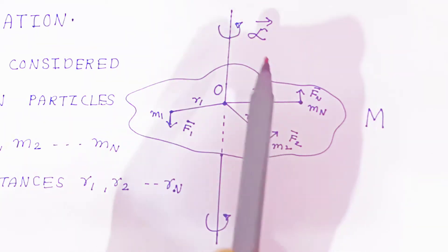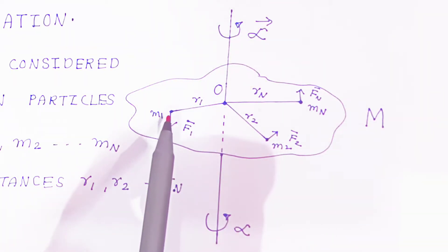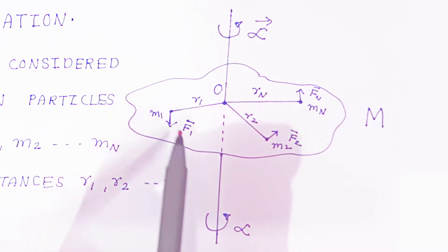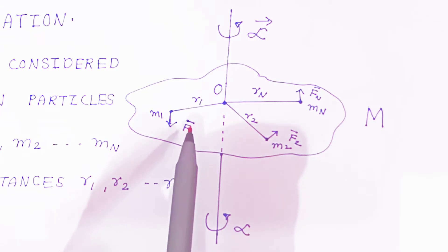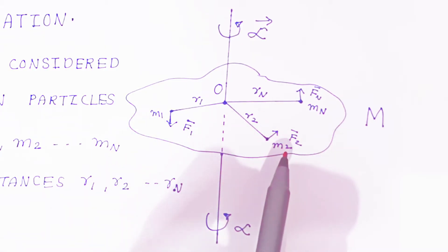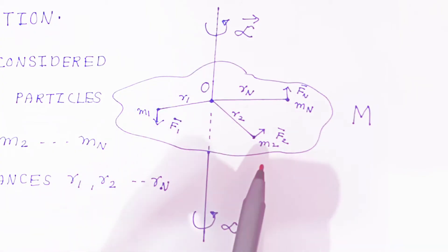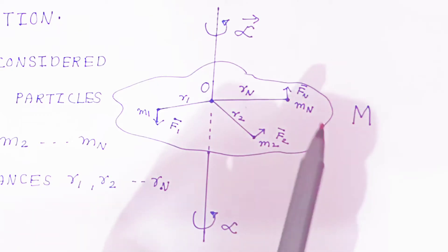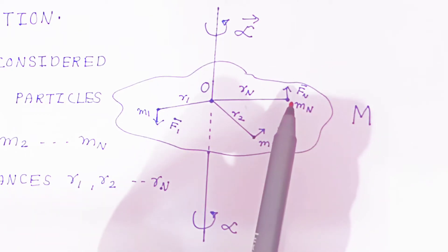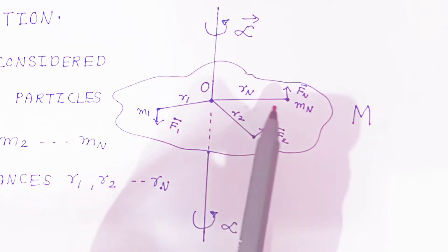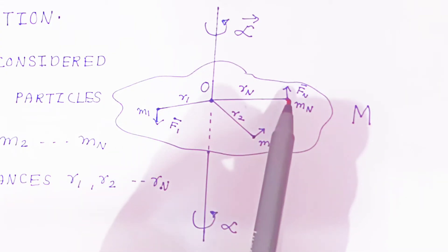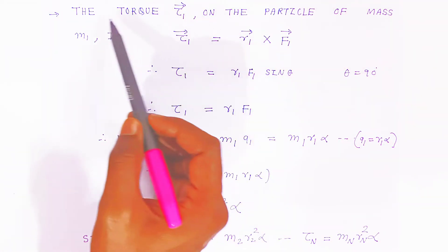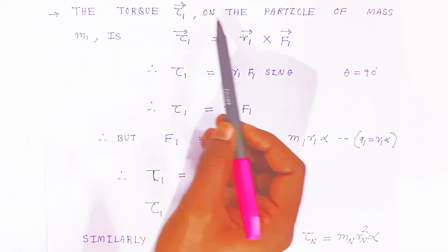The first particle has mass m1 and it is at a distance r1 from the axis of rotation. The force required to rotate it is f1. The second particle has mass m2 and it is at a distance r2 from the axis of rotation, with force f2 acting on it. Similarly, there are n number of particles, so the nth particle has mass mn at distance rn, and the force acting on it is fn.